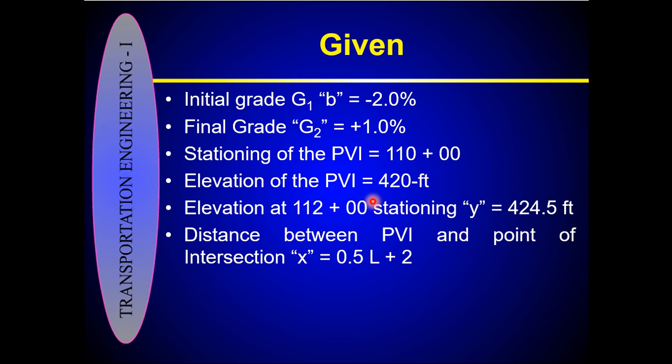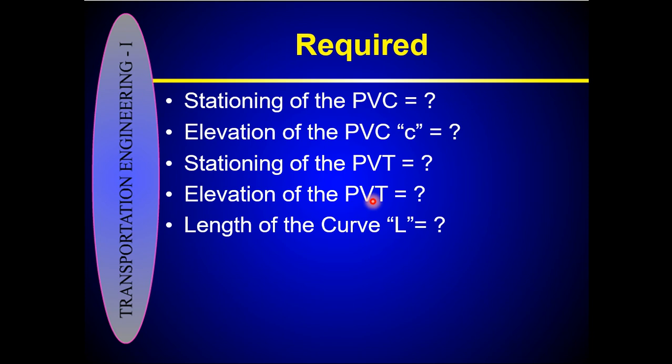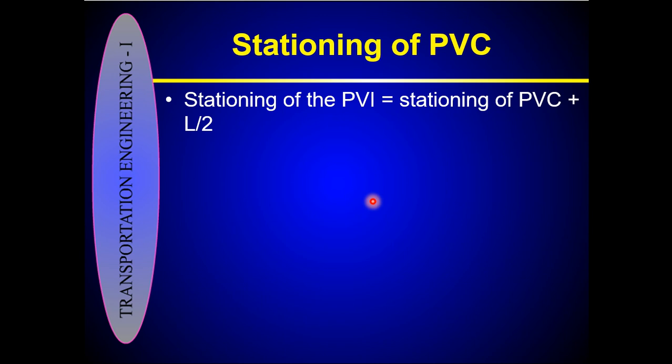To summarize: the initial grade, final grade, stationing of the PVI, elevation of the PVI, and distance between the PVI and the street crossing are all given. You have to calculate the stationing of the PVC, elevation of the PVC, stationing of the PVT, elevation of the PVT, and the length of the curve. First we will calculate the stationing of the PVC.